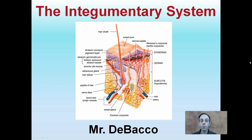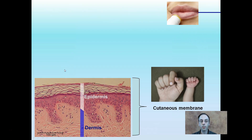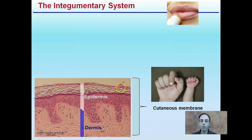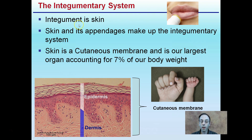This is going to be a brief overview of the integumentary system. Even though you may not know initially what that means by looking at the picture here, you can probably guess we're going to be dealing with something to do with our own skin. Starting with the basics, integument actually means skin, and skin and its appendages make up the integumentary system — that's why it's a system.